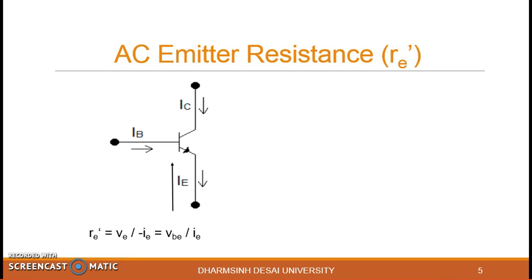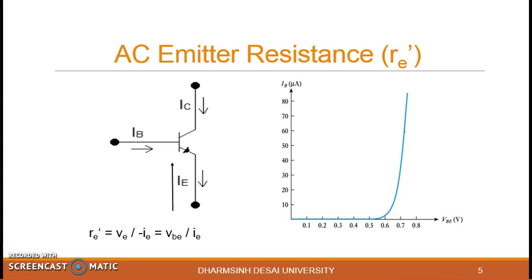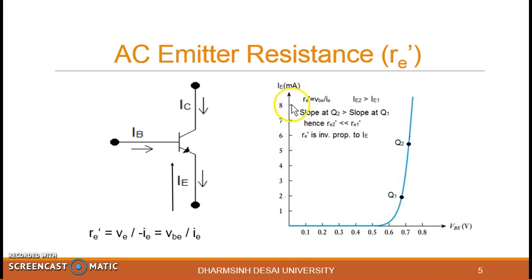Now let us understand with respect to the input characteristic. This is the input characteristic where IB is in micro ampere except like a forward bias diode only. Now I want to understand RE' in terms of capital IE. So instead of plotting this I am converting IB in terms of IB into IE where we know that IC is equal to beta IB and IE is approximately as IC.